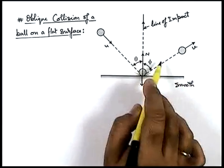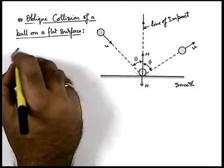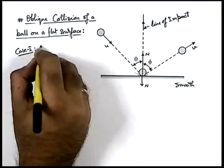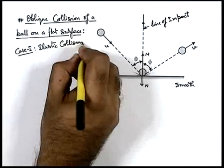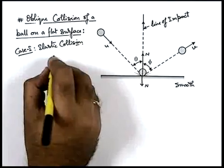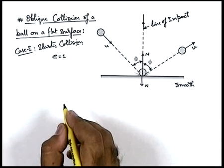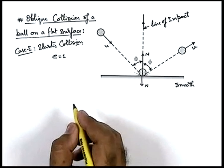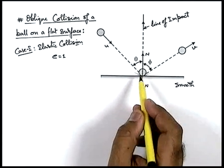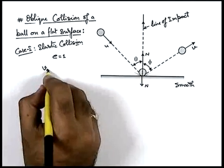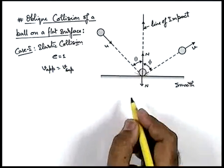In this type of oblique collision of a ball on a flat surface, we analyze three cases. Consider Case 1: elastic collision. Here we take e equal to 1, that is, coefficient of restitution equal to 1. In this situation, velocity of approach is equal to velocity of separation along the line of impact.